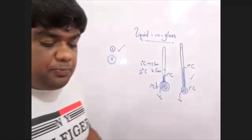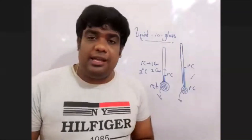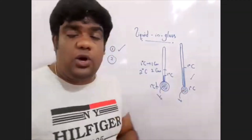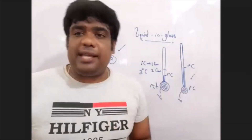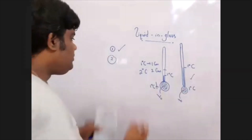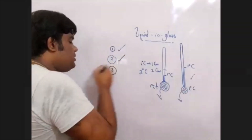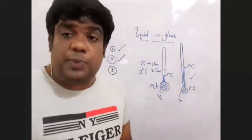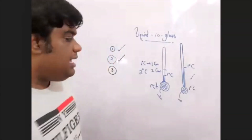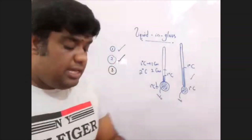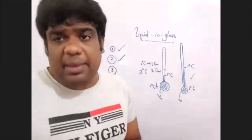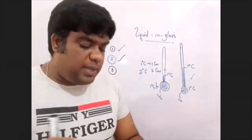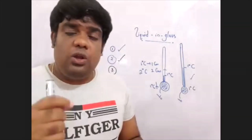Those are the properties of thermometric liquid: high expansivity and uniform expansion. Another property is low specific heat capacity. Low heat capacity means the liquid responds quickly to temperature changes.